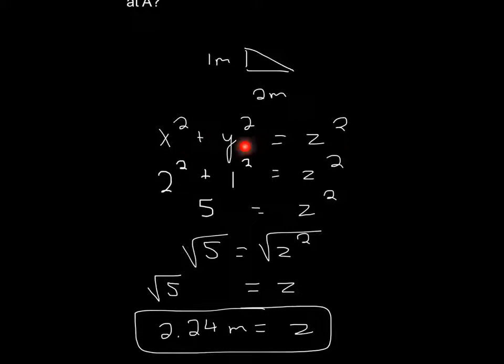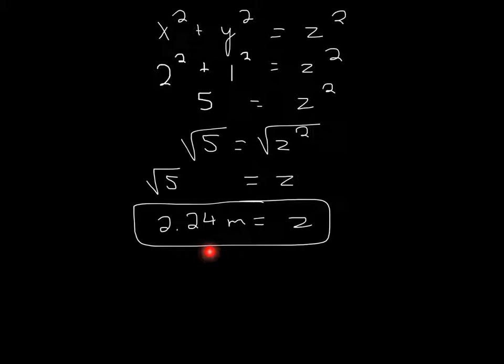And then we just use a simple Pythagorean theorem. So we plug it in, and we have 2 squared plus 1 squared equals z squared, 5 equals z squared, square root that, square root equals z. And you get 2.24.